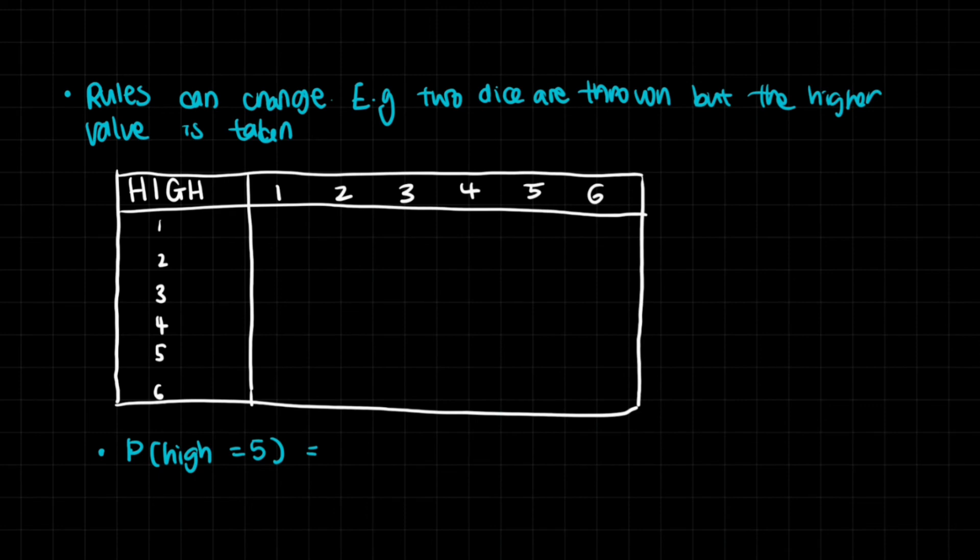So you can see that rules can also change. For example, this time two dice are thrown, but the higher value is taken. So you're not doing some sort of addition subtraction. You're just taking the higher value. And this is also really easy to come up with.